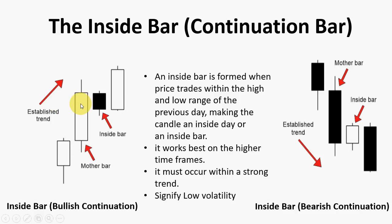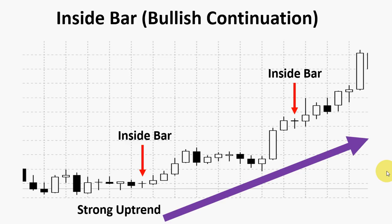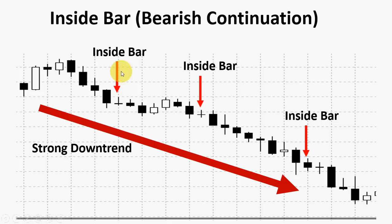So this is the inside bar bullish continuation and the inside bar bearish continuation. We are in an uptrend and this is an inside bar — another inside bar formation. This candle here is contained within the previous candle, and this candle also is contained within the previous candle. For the inside bar bearish continuation, you see a significant downtrend here, and this is an inside bar, another inside bar, another inside bar. You can see the high of the mother bar is higher and the low of the mother bar is lower — that's why we call these inside bars. It's an opportunity to participate in this downtrend.